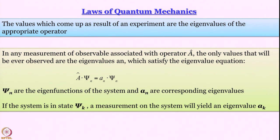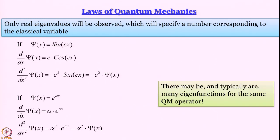And then, like what we saw in Schrodinger equation, the values that come up as a result of experiment, they are essentially eigenvalues of the appropriate operator. A hat operating on psi n gives you an multiplied by psi n. So these are the very basic postulates.